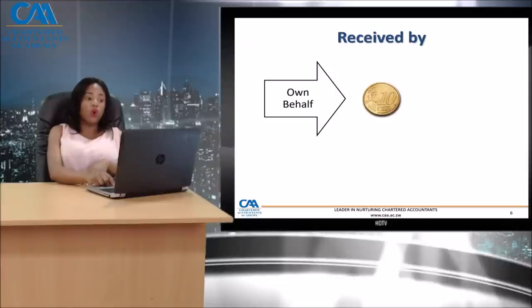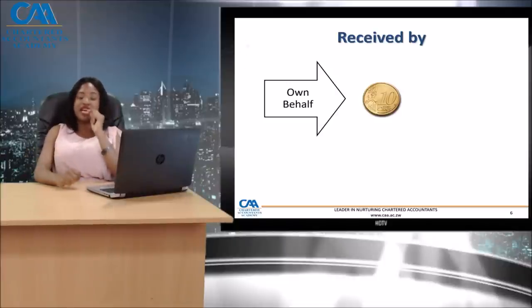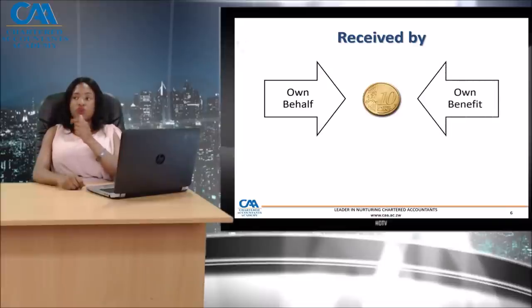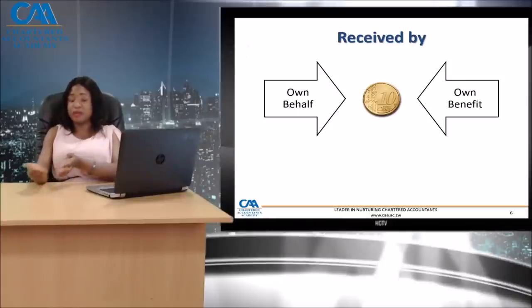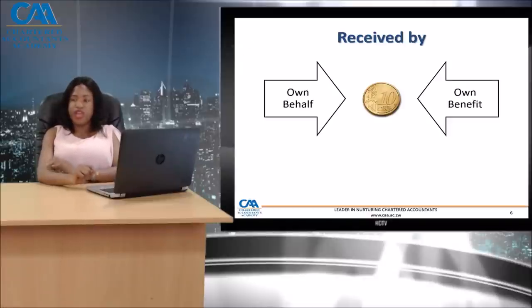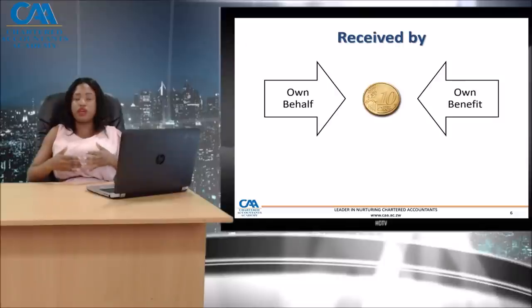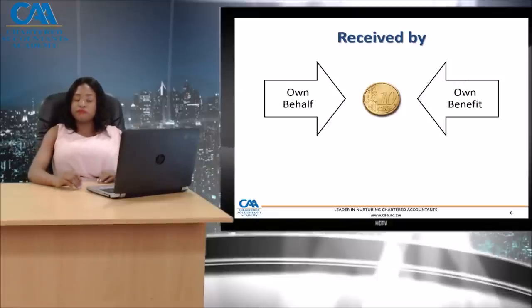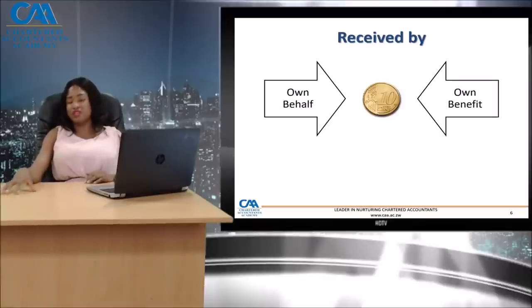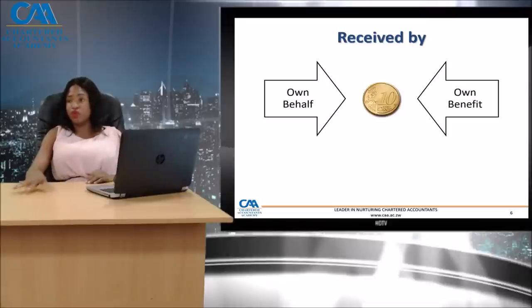Another determining factor is whether you have received an amount for your own benefit. For example, people pay deposits — some are refundable, some are non-refundable. If you receive a refundable deposit, case law describes what 'own benefit' means: if you can use the money to do whatever you want. For instance, if you enter into a five-year lease agreement and the tenant pays a refundable deposit, the landlord will likely use that money, so we can conclude it is for their own benefit.